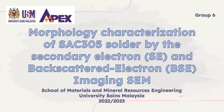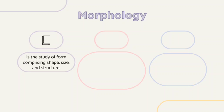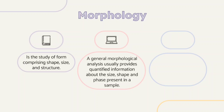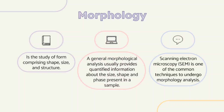Morphology Characterization of SAC-305 Solder by Secondary Electron and Backscattered Electron Imaging SEM. In materials, morphology is the study of form comprising shape, size, and structure. A general morphological analysis usually provides quantified information about the size, shape, and phase present in a sample. Scanning electron microscopy, SEM, is one of the common techniques to undergo morphology analysis.